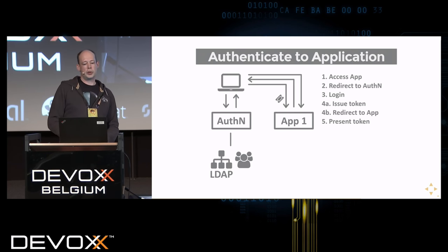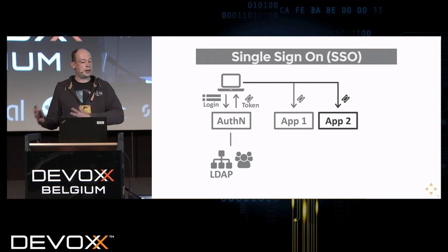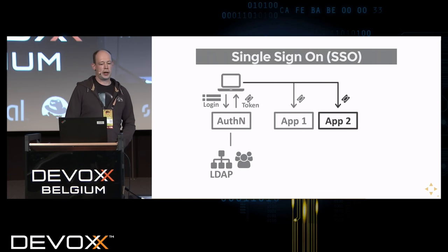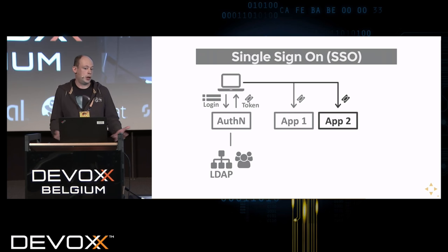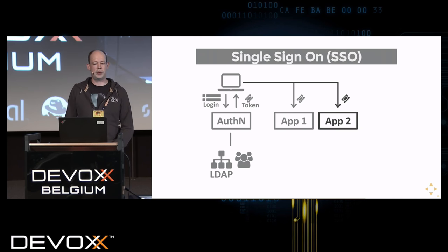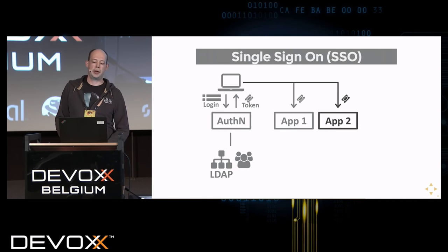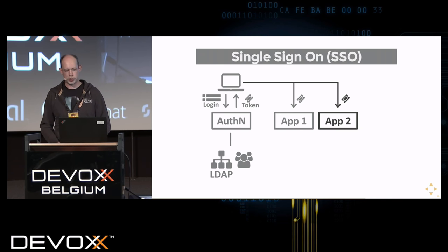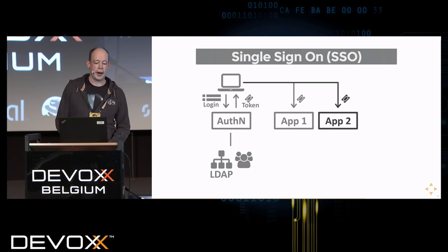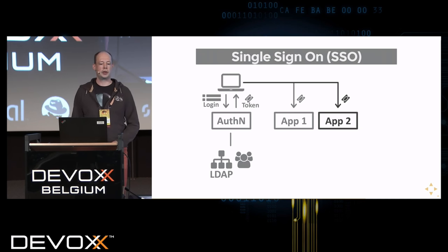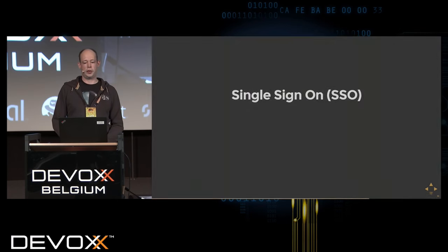Adding additional applications is straightforward: you add application two — which could be your own or a third party's — and this is where having a standards-based solution pays off, as third-party applications are likely to support the standard. The flow is similar: you present a token to the application, and this token can either be the same token as used previously or a different one depending on what you want to achieve.